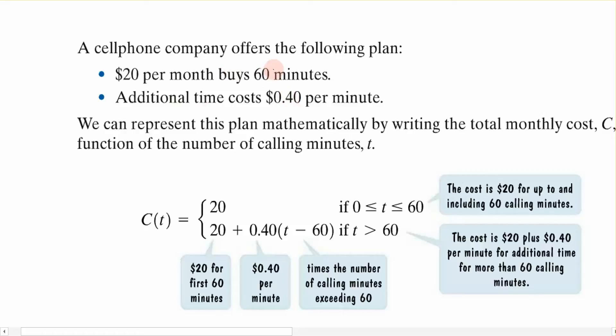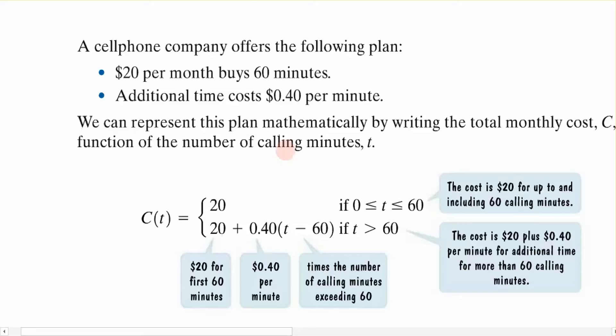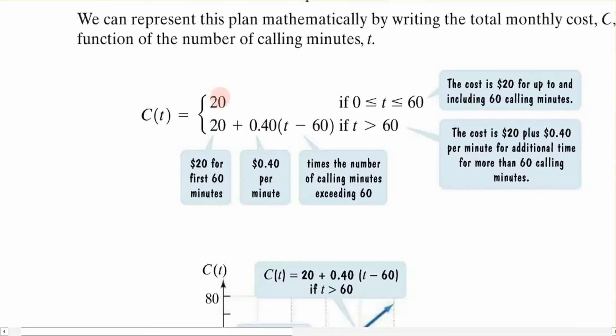This is a typical piecewise function. Now mathematically, we can represent that plan by saying, well, for the first 60 minutes, it's a flat fee of $20. So for the first 60 minutes, if you talk between 0 and 60 minutes, it's $20. If you talk over 60 minutes, then you are going to be charged according to this equation right here, which you can see there.